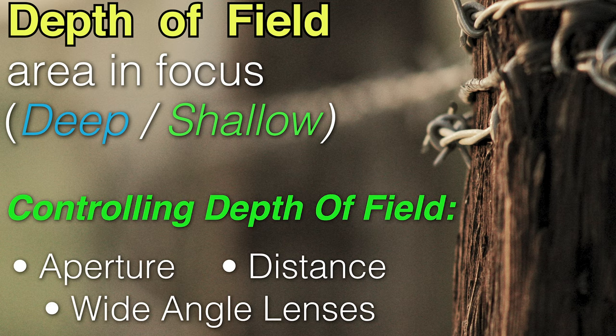The three major things that control depth of field are your aperture — when you close your aperture down and it gets smaller, you get a deeper depth of field. As you back up and get further away from your subject, you get a deeper depth of field. And as you use wide-angle lenses, you get a deeper depth of field. Those are the three most important things. Sensor format also comes into play, but we're going to avoid that discussion for now.